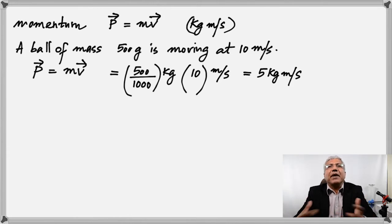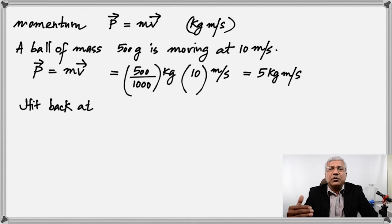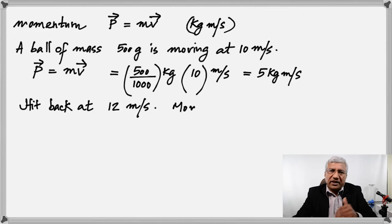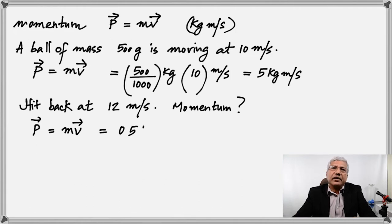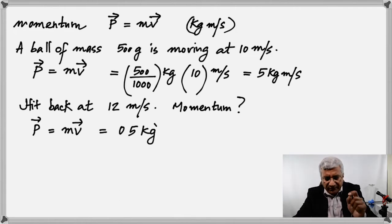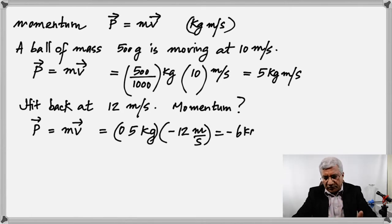What if this ball is hit back? If it is hit back, the direction it's moving now is towards the west. Taking east as positive, west would become negative. So if it's hit back at 12 meters per second, the momentum is 0.5 kilogram times negative 12 — be careful about the negative 12 because it's coming straight back. That gives you negative 6 kilogram meter per second.